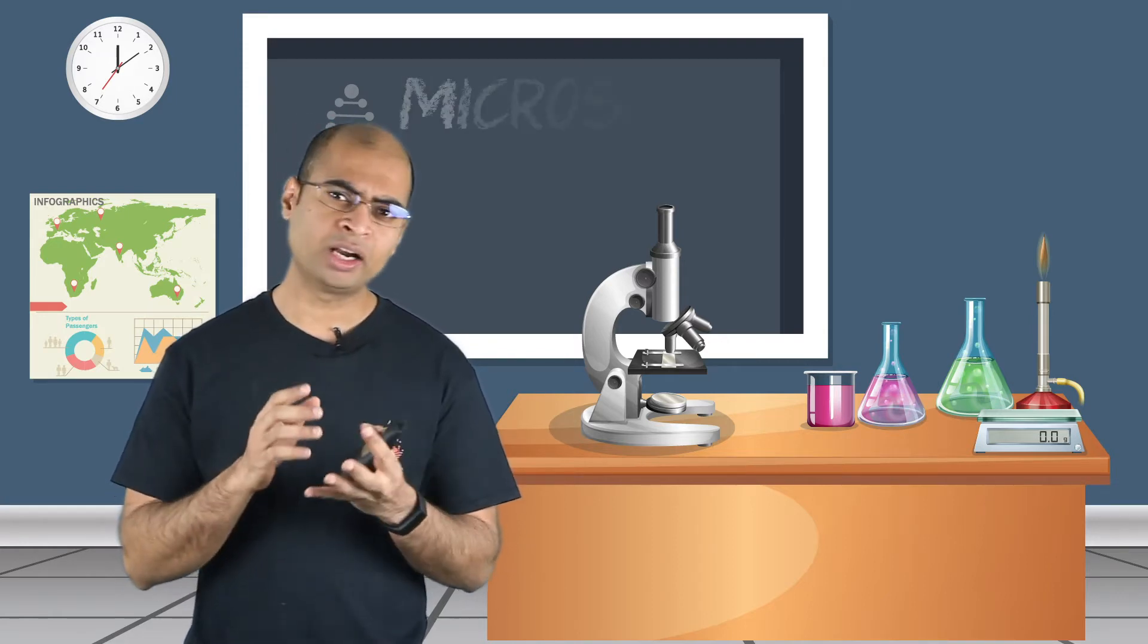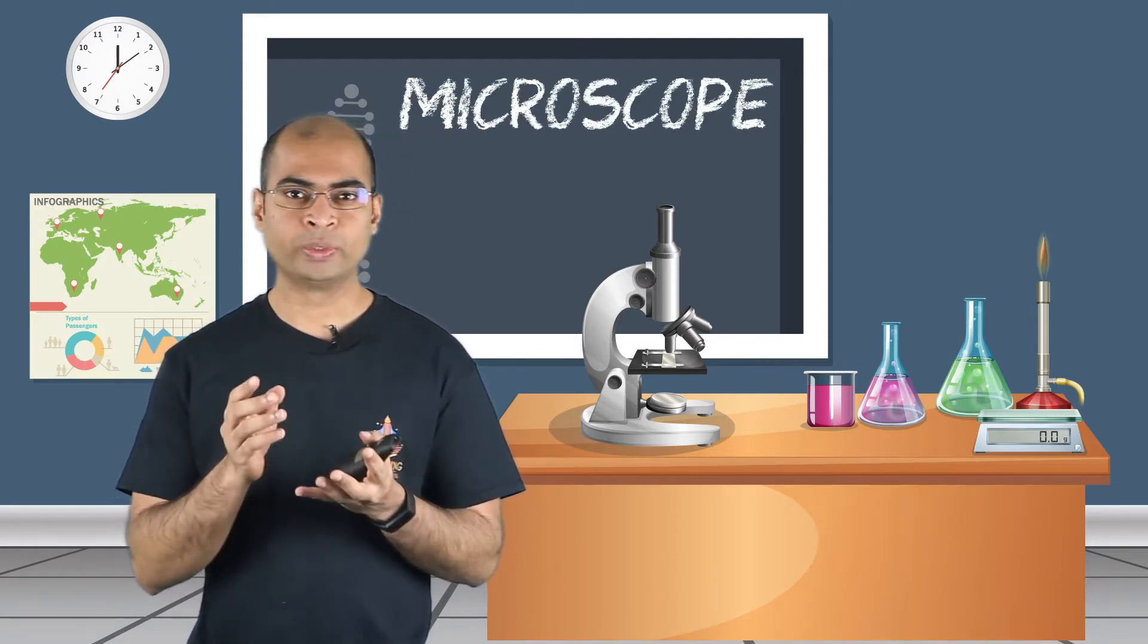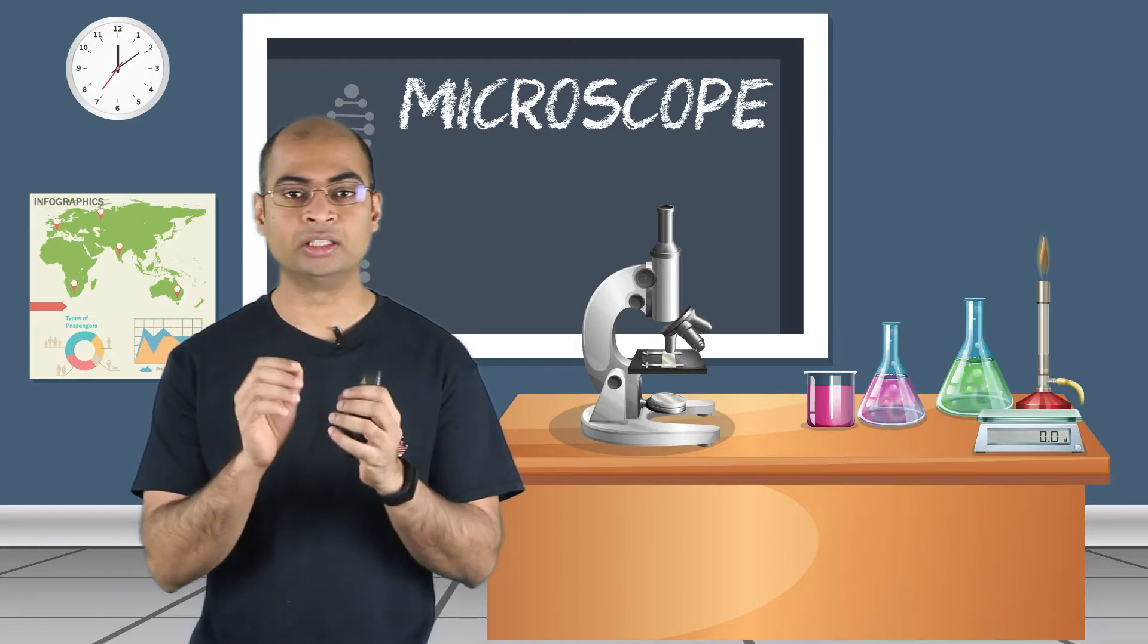But we already know of a tool that helps us to see very small things. Remember how we saw microorganisms in earlier chapter by magnifying them under a microscope? So we can see these tiny cells in the same way.